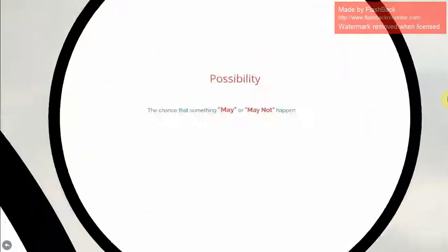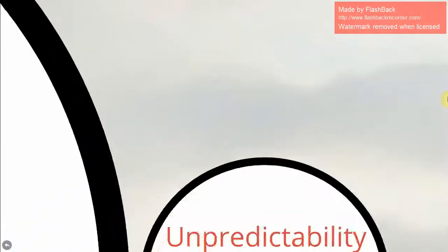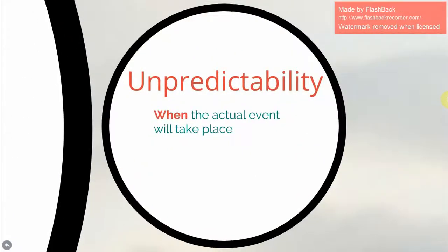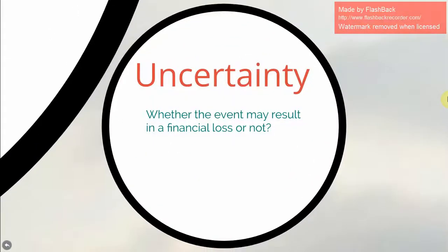Possibility is the chance that something may or may not happen. For example, whether the customer's car will get stolen or not. Unpredictability refers to when the actual event will take place — when will the car get stolen? And uncertainty is whether the event may result in a financial loss or not.